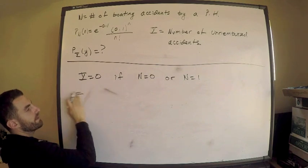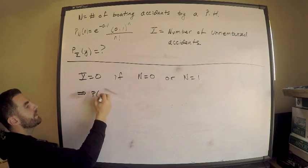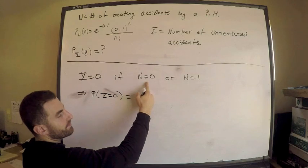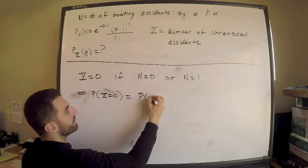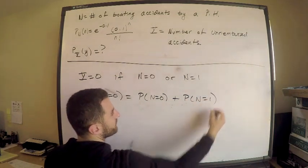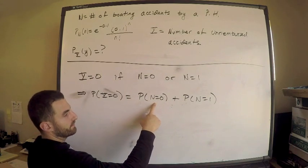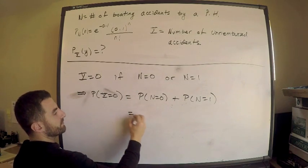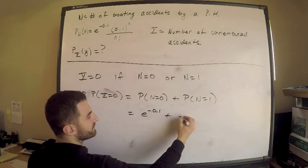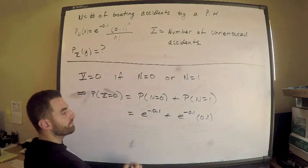So this tells me that the probability that Y is zero is equal to either N is zero or N is one, the probability that N is zero plus probability that N is one. But we have the probability mass function for N. So this is equal to, what's the probability N is zero? This is e^(-0.1). What's the probability N is one? This is e^(-0.1) times 0.1.